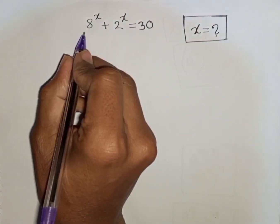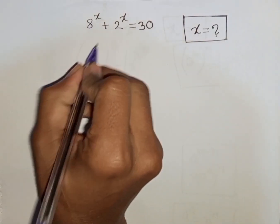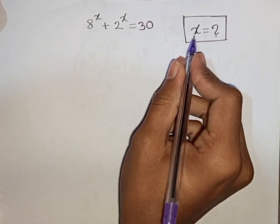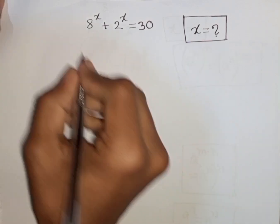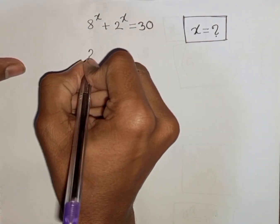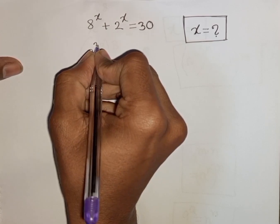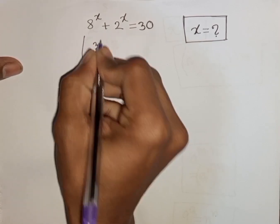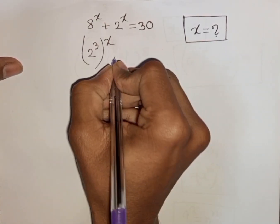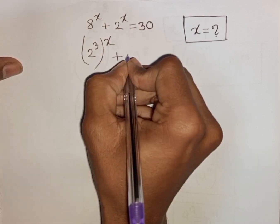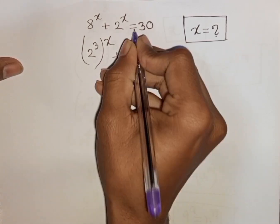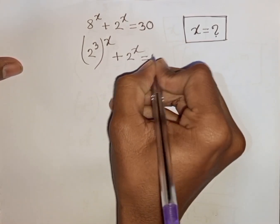How to solve 8 power x plus 2 power x is equal to 30. Find the value of x. We have 8 power x, which is the same as 2 power 3, bracket power x, plus 2 power x is equal to 30.